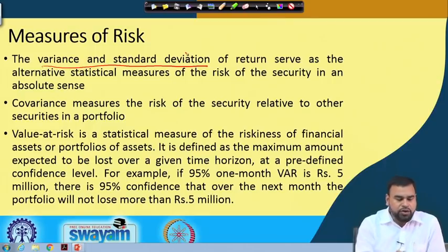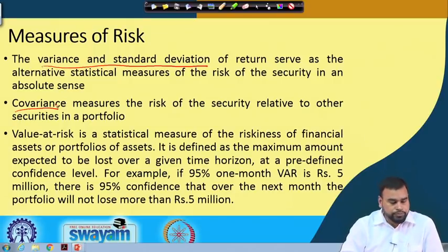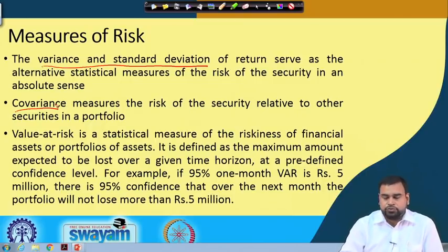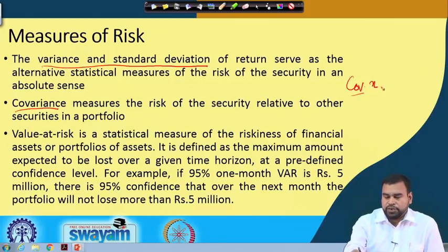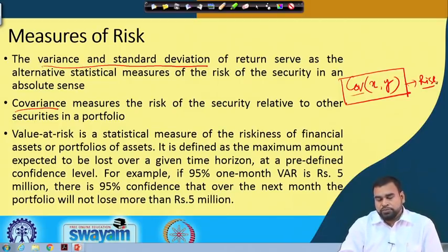Another measure is covariance. Covariance basically measures the risk of a security relative to another security in the market or in a portfolio. Whenever we compare different types of alternatives for choosing assets in the market, we use the concept of covariance between X and Y. That covariance measures the relative riskiness of a particular variable and whether that particular alternative can be taken for investment or not.